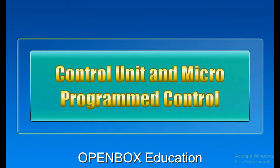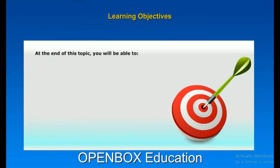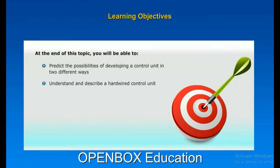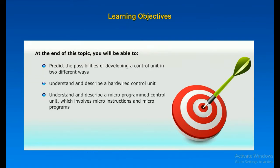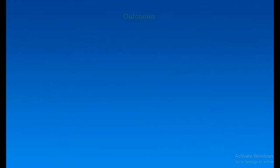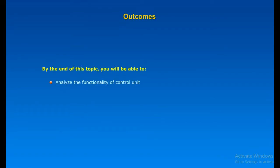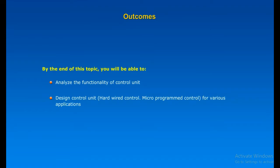Control Unit and Micro-Programmed Control. Learning objectives: by the end of this topic you will be able to predict the possibilities of developing a control unit in two different ways, understand and describe a hard-wired control unit, and understand and describe a micro-programmed control unit which involves micro-instructions and micro-programs. Outcomes: analyze the functionality of a control unit and design hard-wired and micro-programmed control for various applications.